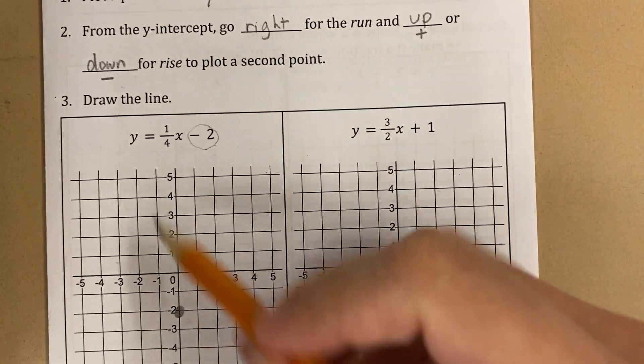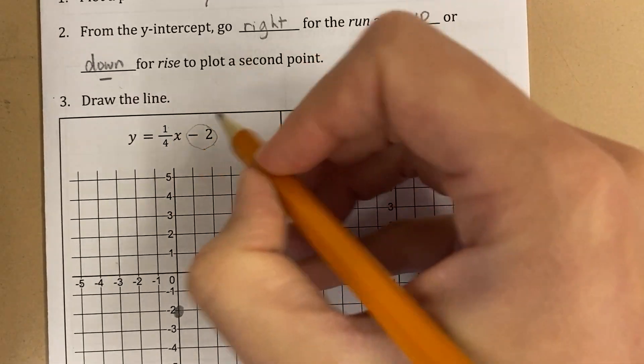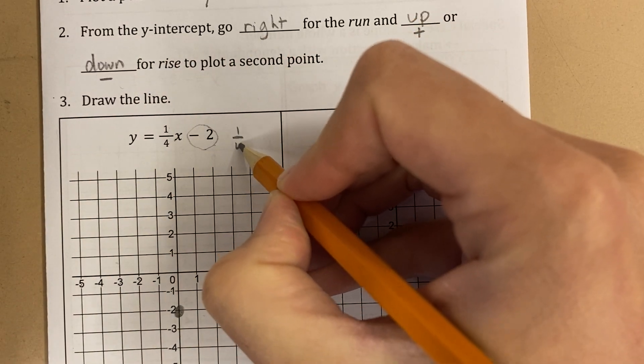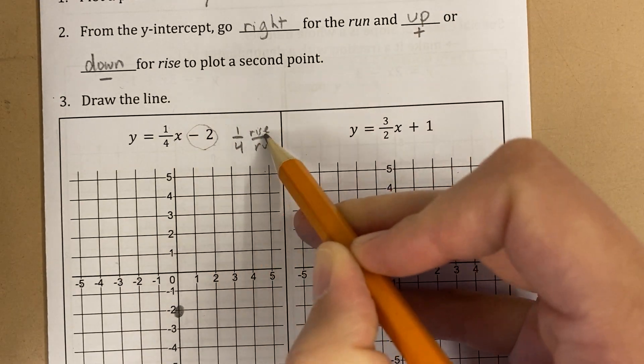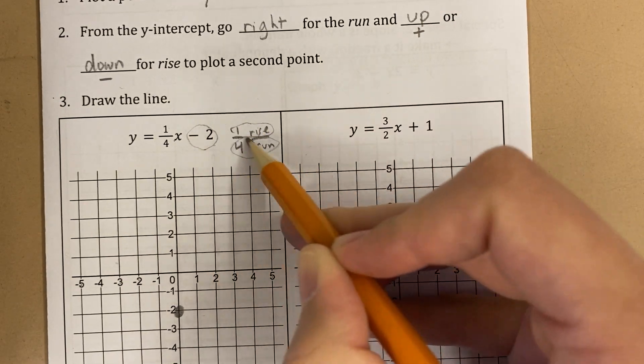So let's take a look. Here, my rise over run, and I actually even just like to write it like this, write it out separate. So here, my rise is 1, and my run is 4.